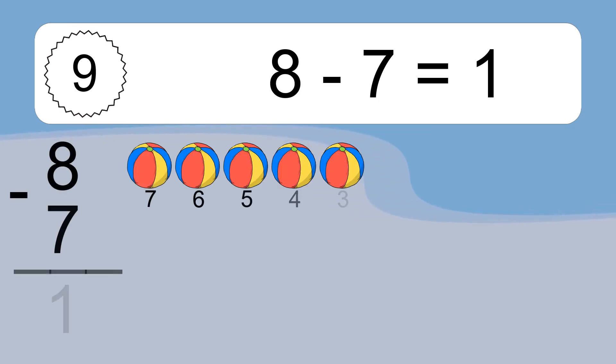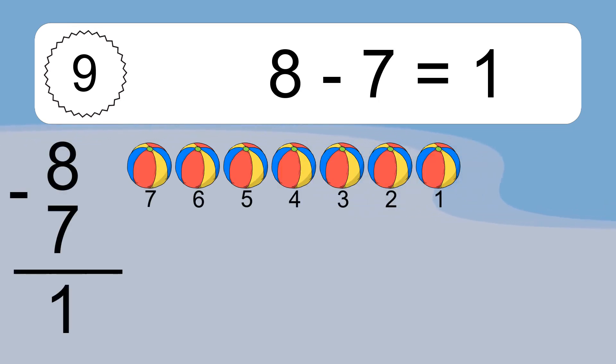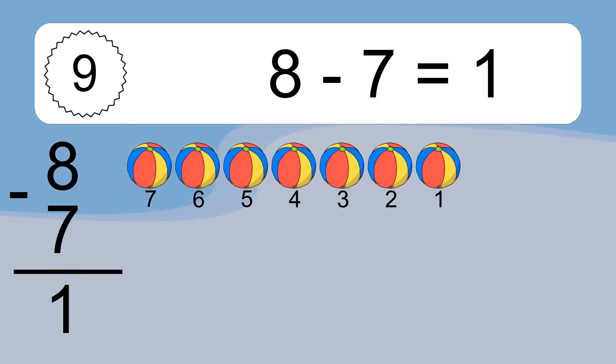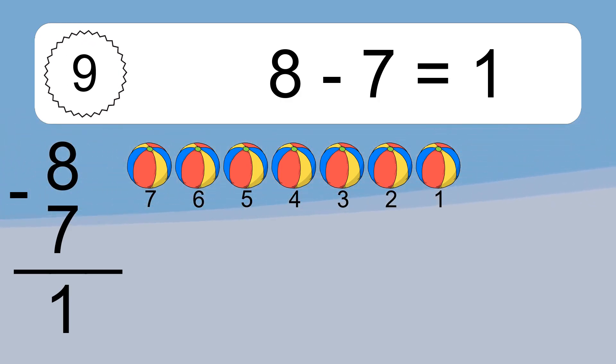8 minus 7 equals 1. Let's count it! 7, 6, 5, 4, 3, 2, 1.